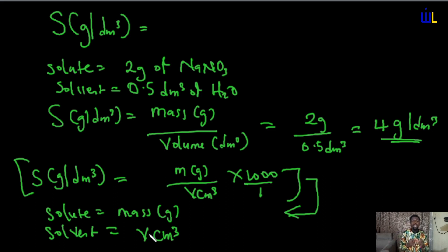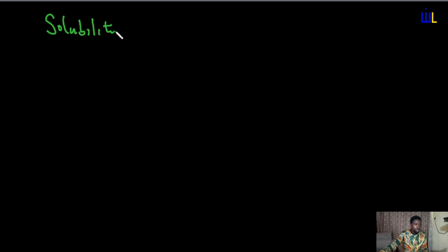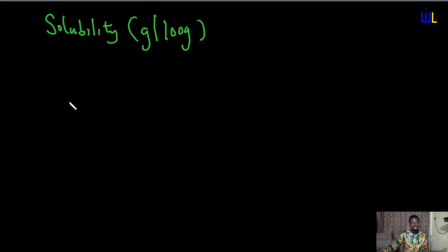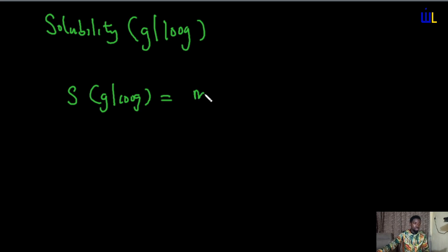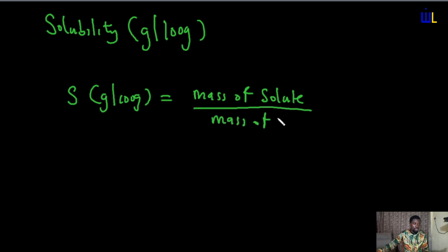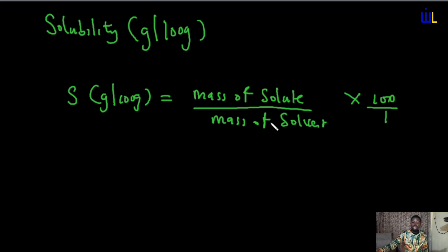Now we'll get into the final popular unit of solubility — gram per hundred gram. Solubility can also be expressed in a unit known as gram per hundred gram. This unit is quite simple: solubility in gram per hundred gram is expressed by the mathematical expression mass of solute divided by mass of solvent, multiplied by 100 over 1.